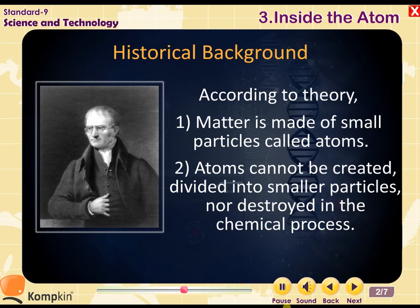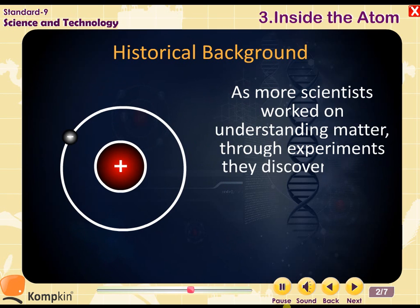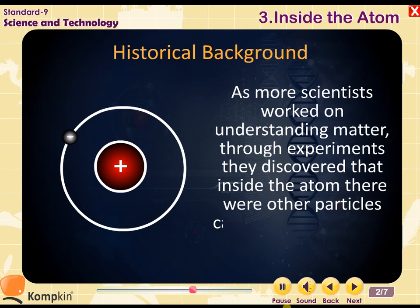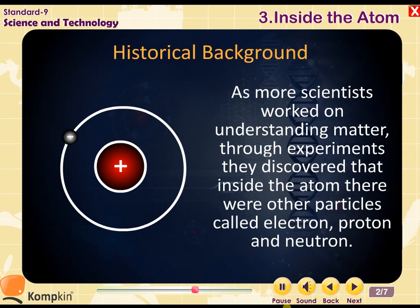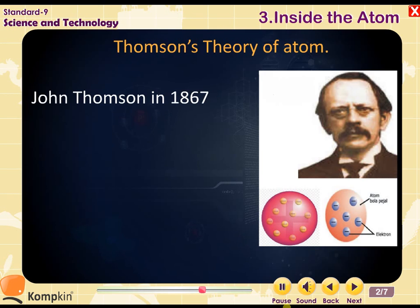Atoms cannot be divided into smaller particles, nor destroyed in the chemical process. As more scientists worked on understanding matter through experiments, they discovered that inside the atom there were other particles called electron, proton, and neutron.